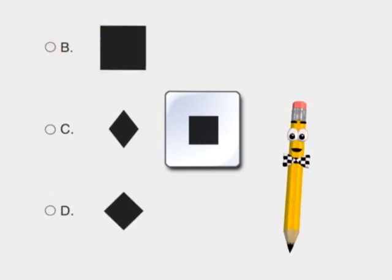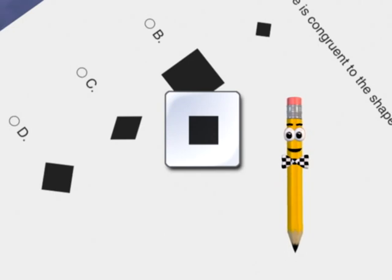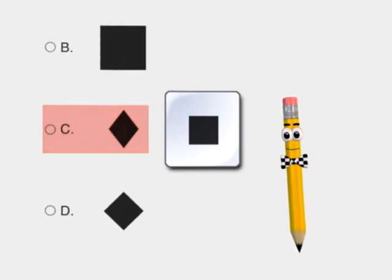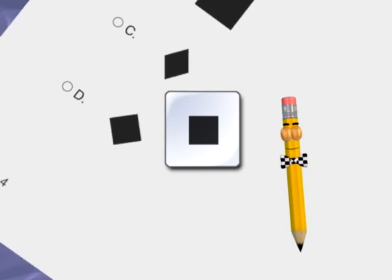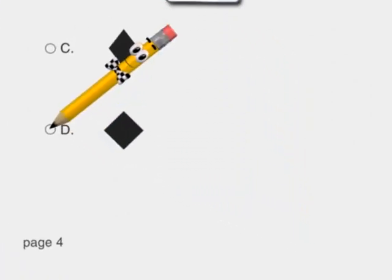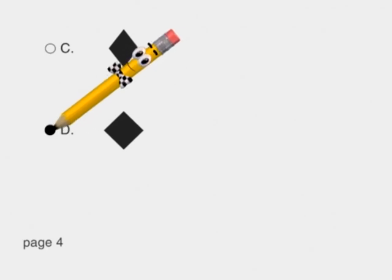Shape C is a diamond no matter which way we turn the page. But shape D is a square of the same size turned on its corner. So the answer is D.